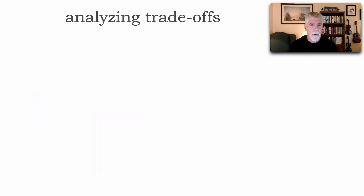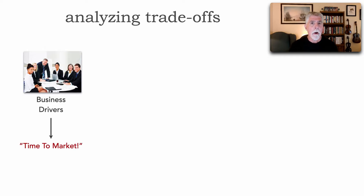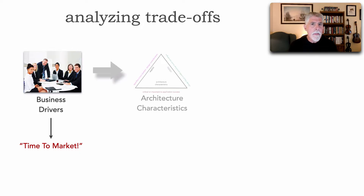When we analyze trade-offs, the first grounding aspect is the corresponding business drivers. For example, let's say the business driver for our particular system is time to market — getting changes out to our customers as fast as possible. That is the primary concern of the business. What we do is take those business drivers and translate them to architectural characteristics.